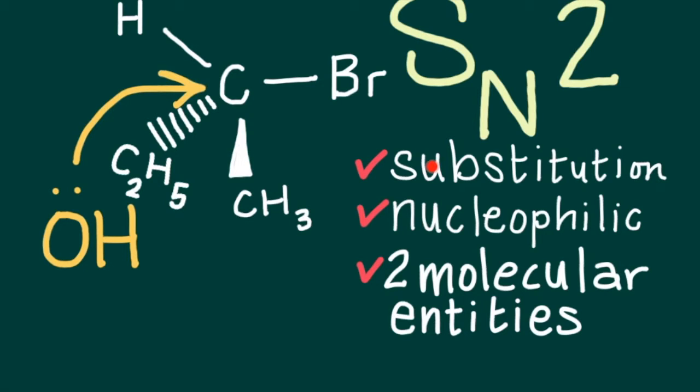S for substitution, N for the fact that a nucleophile is involved, a species which behaves as a Lewis base and seeks out a positive center, and finally a 2 because the rate of the reaction is dependent upon two molecular entities.